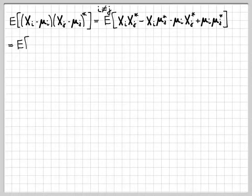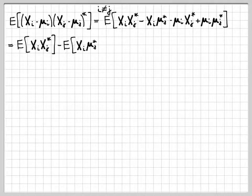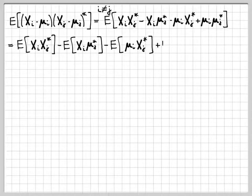Once I just do some algebra, I'm going to end up with four terms inside my expectation just by multiplying all these out. Then instead of writing the expectation of a sum of terms, I'm going to write this as a sum of expectations, just using the fact that the expectation operator is linear.